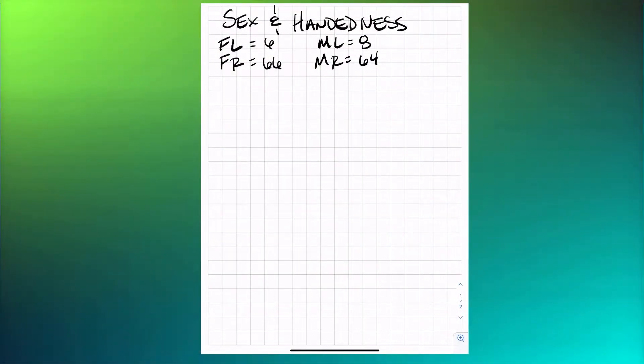Welcome back. Thank you for clicking on today's video. Today we're going to be talking about joint distributions. Specifically, we're going to be looking at a contingency table that includes sex and handedness.